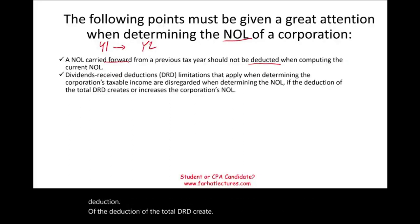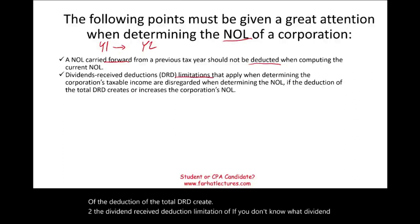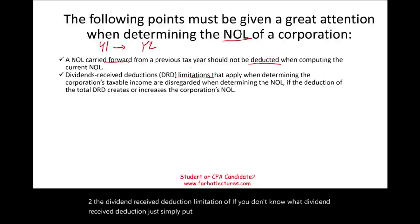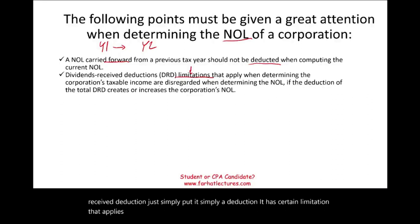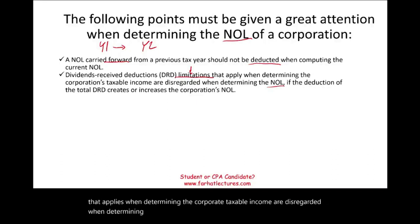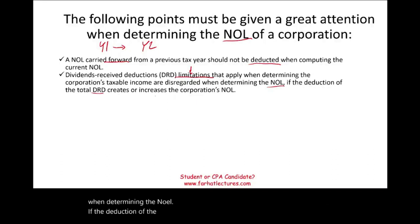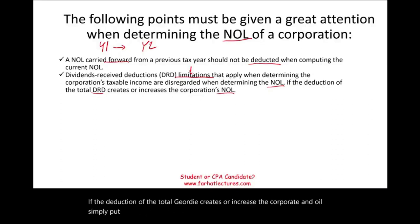Second, the dividend received deduction, or DRD, limitation. The DRD has certain limitations that apply when determining the corporation's taxable income, but those limitations are disregarded when determining the NOL if the full DRD creates or increases the corporate NOL. Simply put, if the DRD creates or increases the NOL, you disregard the limitation when computing this deduction.